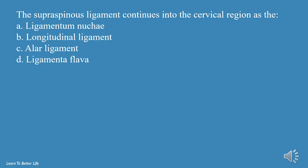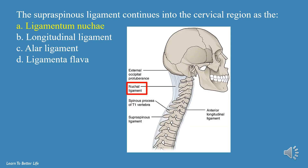The supraspinous ligament continues into the cervical region as the: a. Ligamentum Nuchae, b. Longitudinal Ligament, c. Alar Ligament, d. Ligamenta Flava. The answer is a, Ligamentum Nuchae.